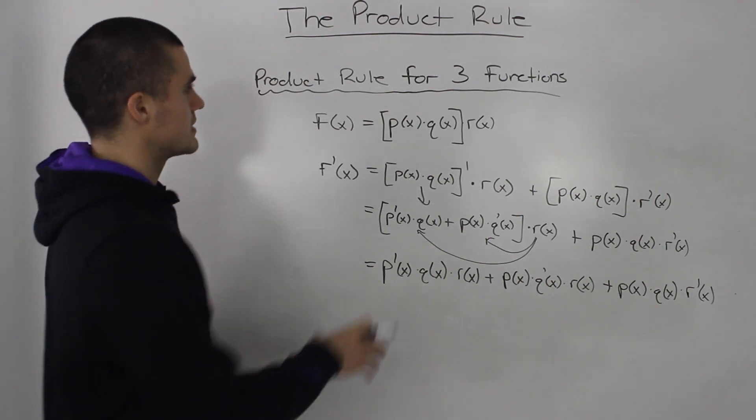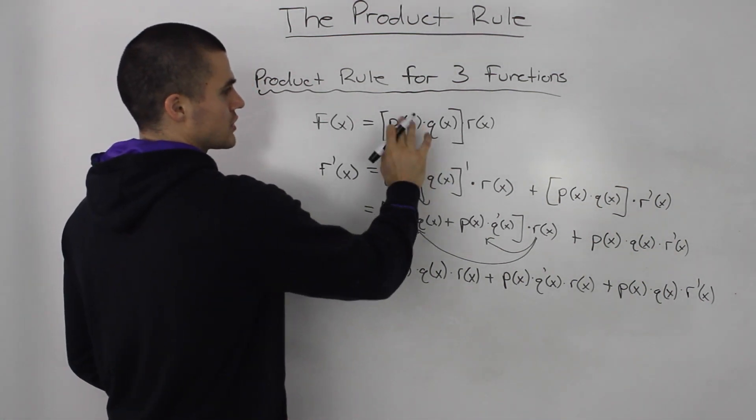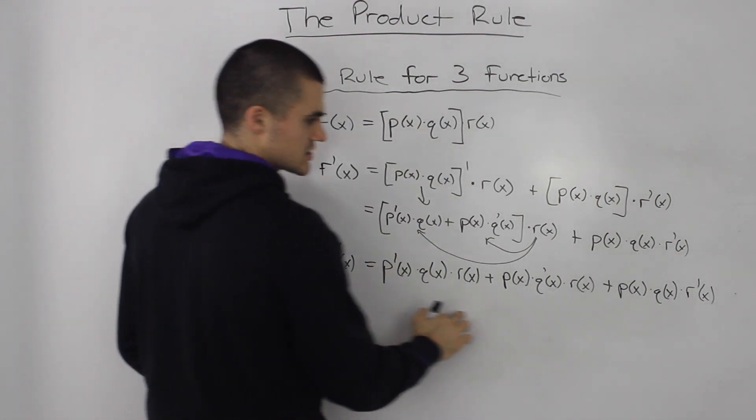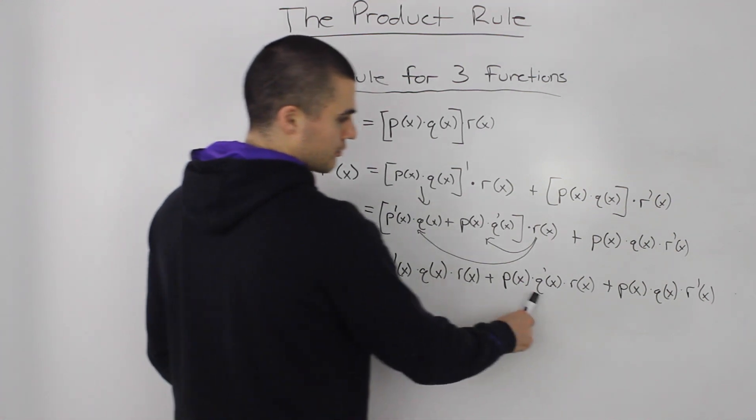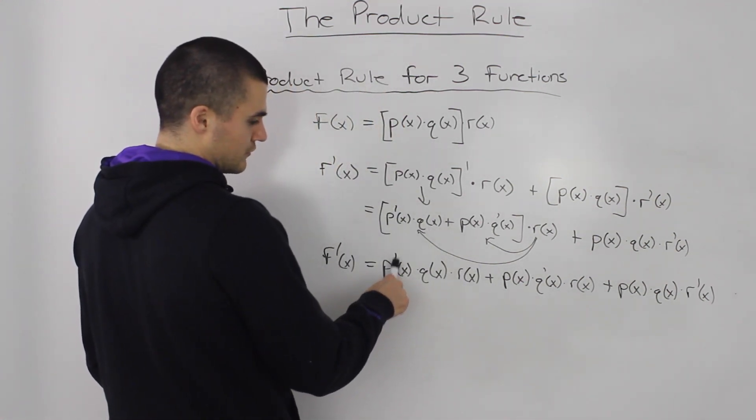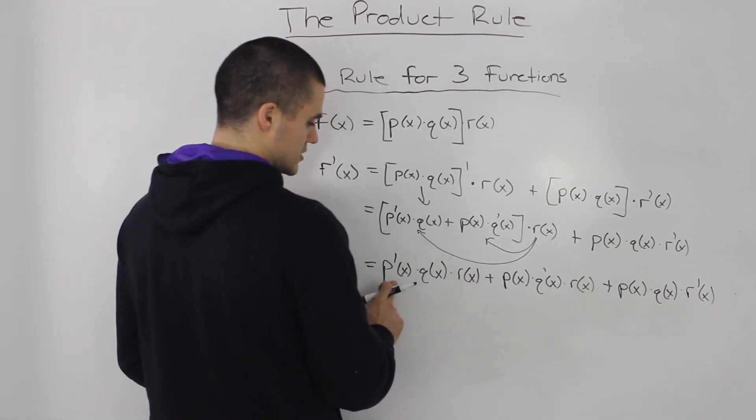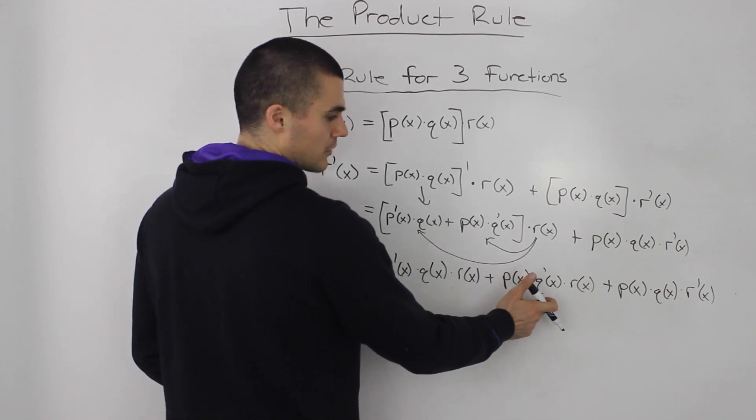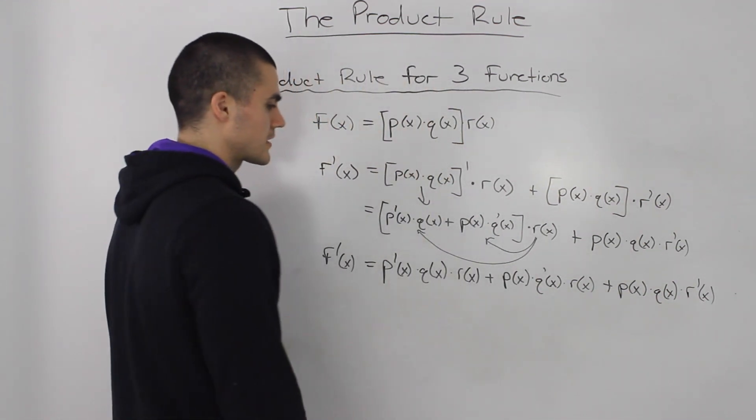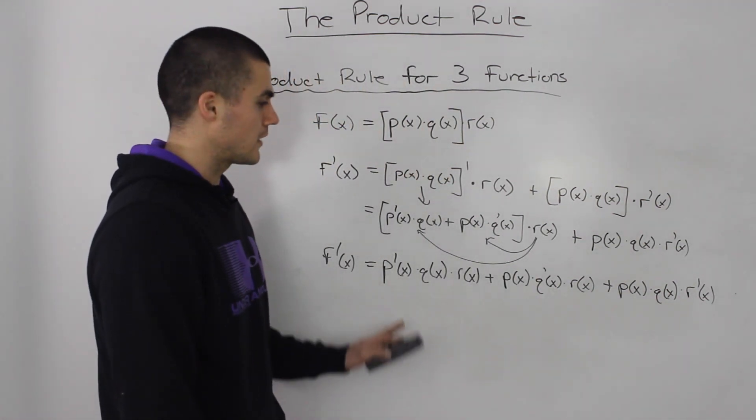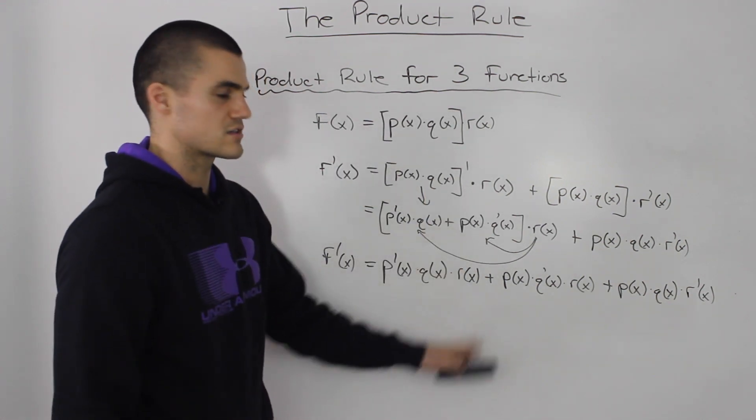And that's it. That's the product rule here. If you have a function as a product of three functions, it's just this long derivative here. And it's pretty simple to remember. You just add three parts, and each part will be the derivative of one of the functions times the other two functions left as they are. So p prime of x, here you have q prime of x with the p and r left as the same, and then the p and q are left the same and you got r prime of x there. So it's not too bad, but you may run into questions where you'll have to do the derivative of the product of three functions. So this is the formula.